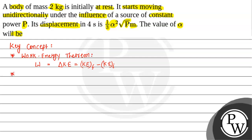The second concept that we will use here is the formula for power. As we know, power is the rate of work done. So we can write power p as W divided by t.